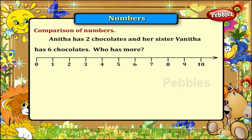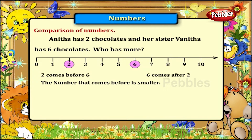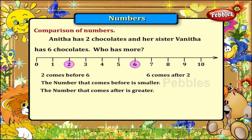Now which number comes first? Number 2 comes before number 6. 6 comes after 2. The number that comes before is smaller. The number that comes after is greater.